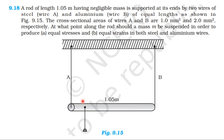So we have a rod that is 1.05 meter long. The two wires are of equal length, but the areas of cross-section of these wires are different. For the steel wire, the area of cross-section is 1 mm². For the aluminium wire, the area of cross-section is 2 mm².